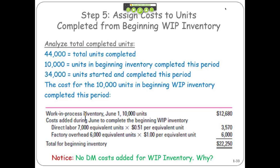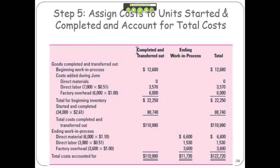Similarly, factory overhead was 40% completed, leaving 60% at a dollar per unit — $6,000. So this $12,680 carried over — that was the amount spent last month on these units — and we added $9,570. And here's the total cost going to finished goods for those units that were finished from the previous period.